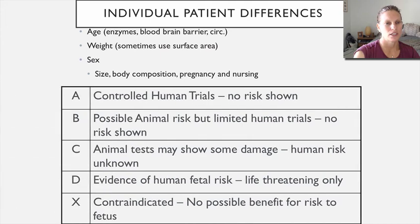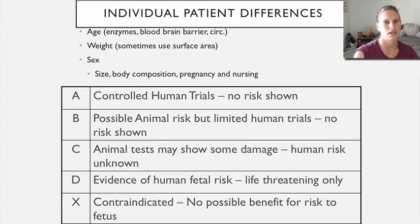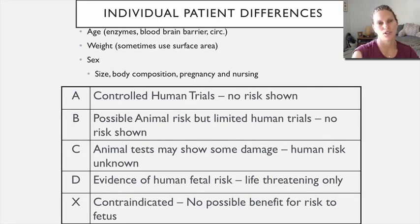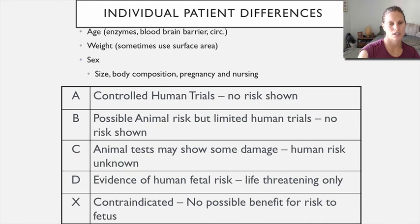Patient-to-patient variability must also be considered: age and the state of their enzyme systems, the status of their blood-brain barrier, their circulation, their weight, body composition including fat, surface area, and whether they are pregnant or nursing — all of these are factors to consider in drug therapy.